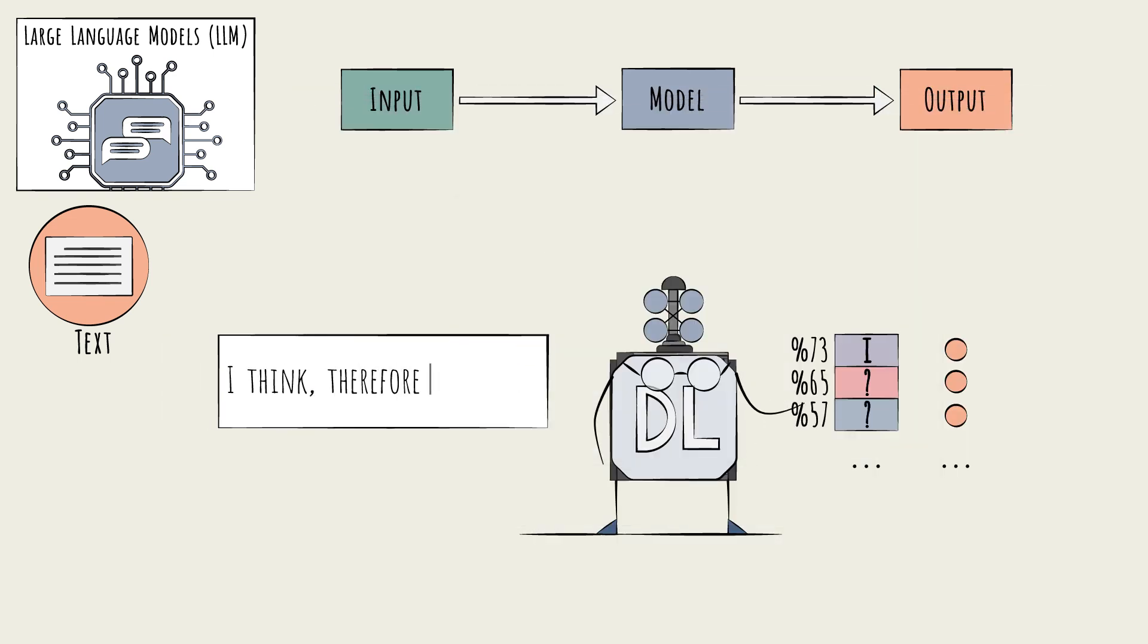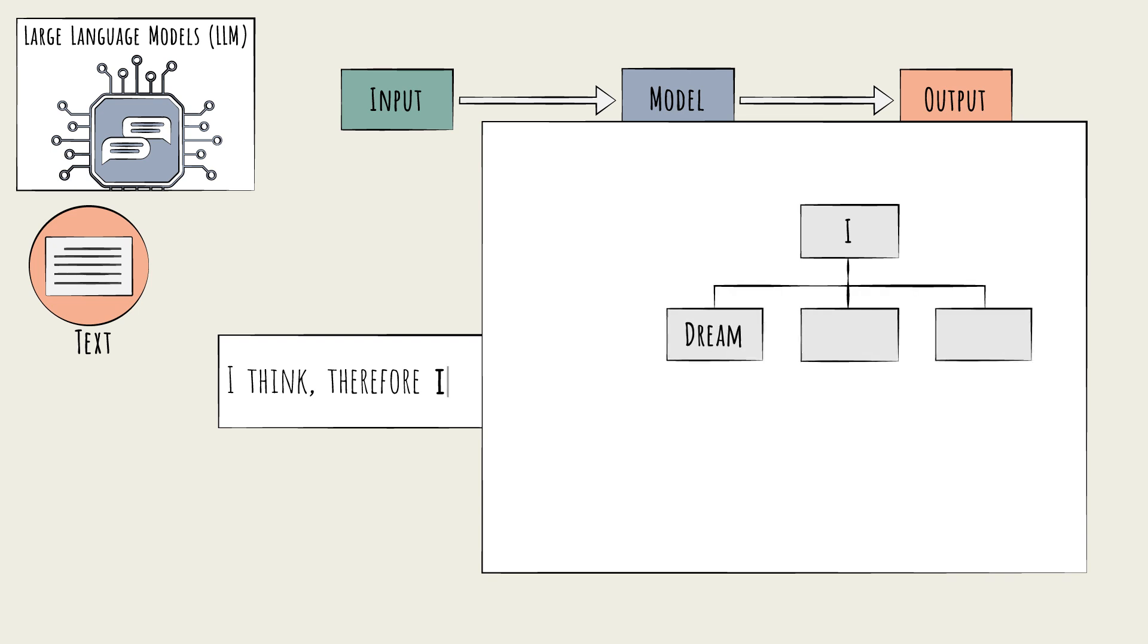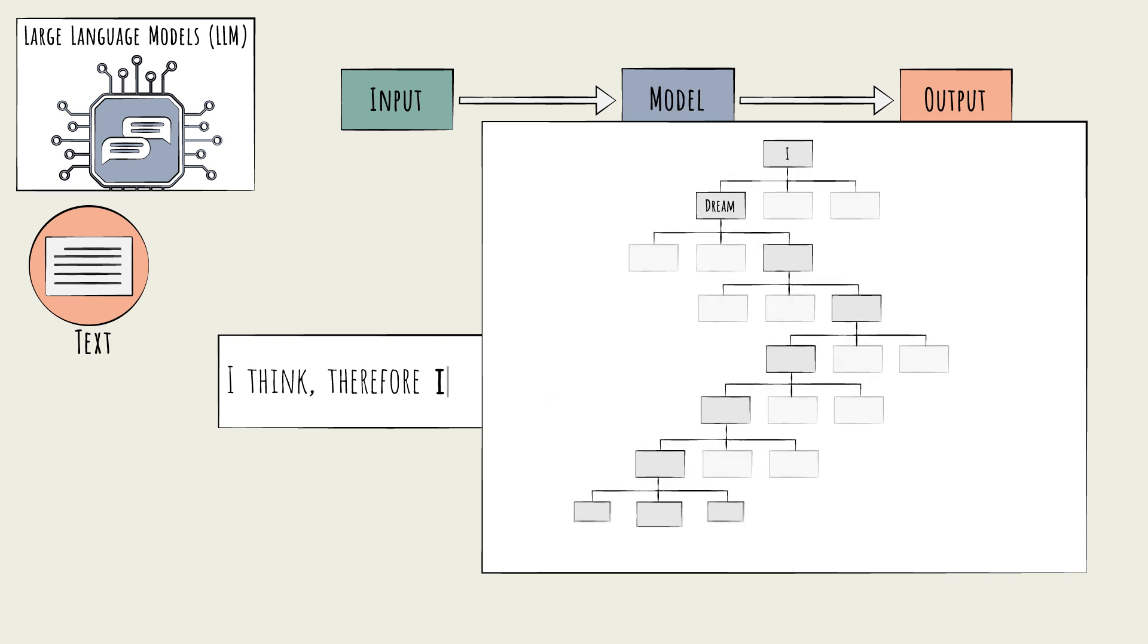Once the model has selected the next token, in this case, I, the process repeats. The previous output now needs to become an input to the next step. This is part of what makes text unique – sequence matters. Each word depends on the ones that came before it.